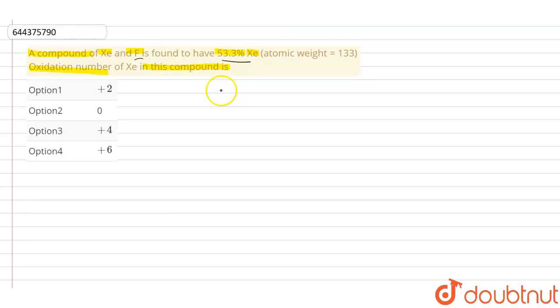So amount of xenon is 53.3 percent and the percentage of fluorine then will be 100 minus 53.3, and that will be equal to 46.7 percent. Now we will find the moles of xenon.